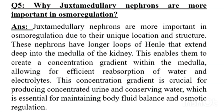Question number 5: Why are juxtamedullary nephrons more important in osmoregulation? Answer. Juxtamedullary nephrons are more important in osmoregulation due to their unique location and structure. These nephrons have longer loops of Henle that extend deep into the medulla of the kidney. This enables them to create a concentration gradient within the medulla, allowing for efficient reabsorption of water and electrolytes. This concentration gradient is crucial for producing concentrated urine and conserving water, which is essential for maintaining body fluid balance and osmotic regulation.